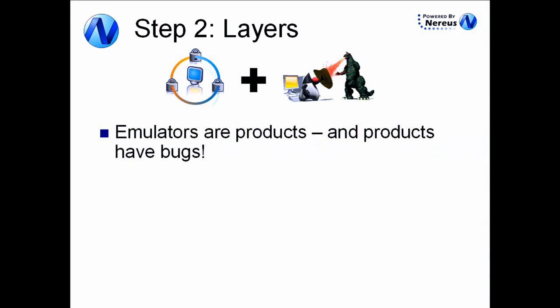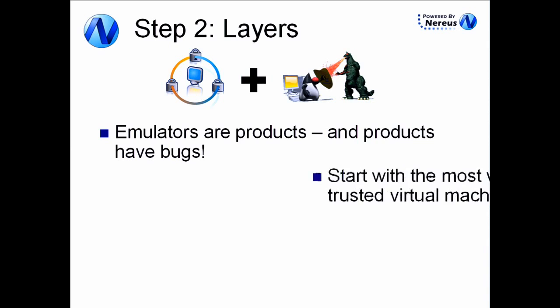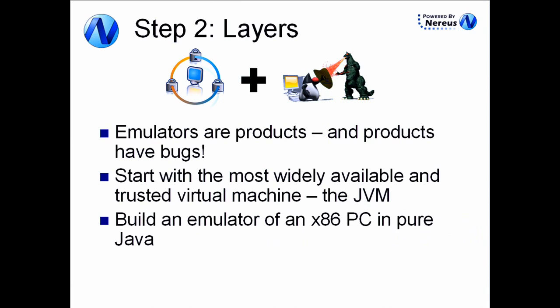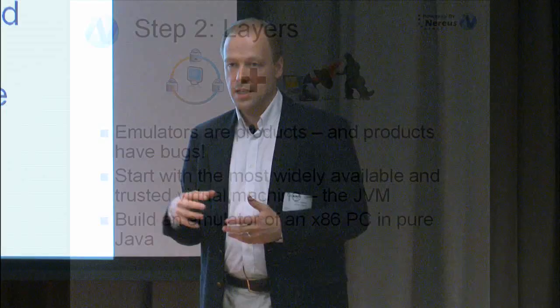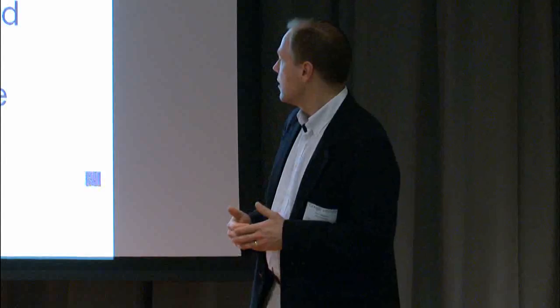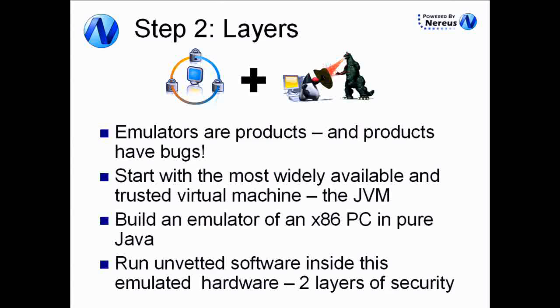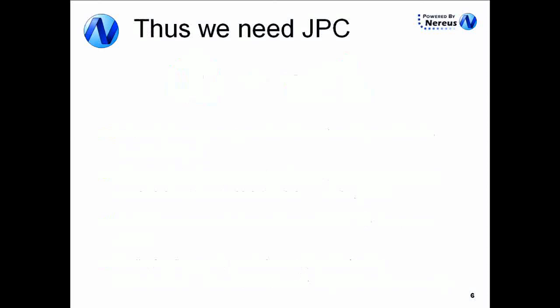Here are the layers I'm proposing — a two-layer approach. Emulators are products, so even emulators will have bugs, and you can't rely on them alone. So why not start with the most widely available and trusted virtual machine — the Java Virtual Machine, which was built to run third-party code, as applets essentially are. We then built an emulator for x86 execution in pure Java, staying within the JVM applet sandbox rather than getting around it.